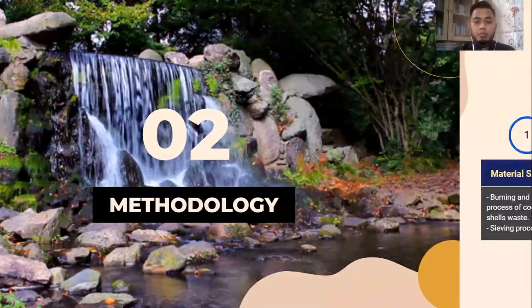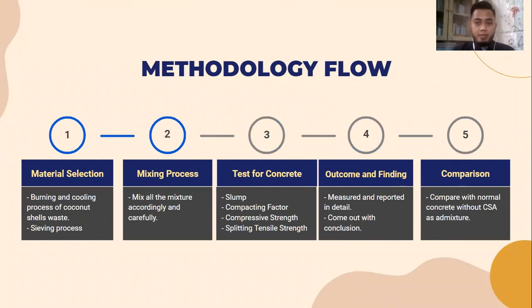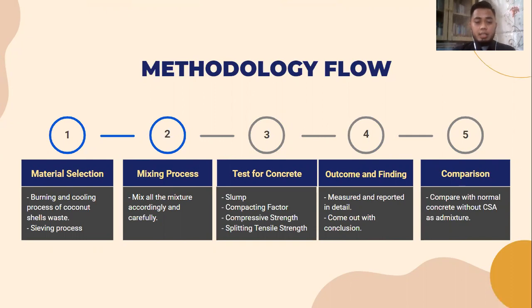For the methodology flow, I will explain briefly how I conducted the work in FY22. The first step is the burning and cooling process of the coconut shell waste to produce the ash, along with the sieving process for the aggregate. Next is the mixing process, where I mixed all the materials carefully. Then I conducted tests on the concrete, divided into fresh and hardened concrete tests: the slump test, the compacting factor test, the compressive strength test, and the splitting tensile strength test. All results were measured and reported to form a conclusion, and compared against normal concrete without CSA.